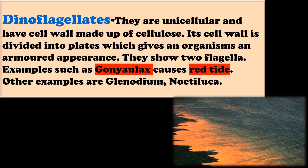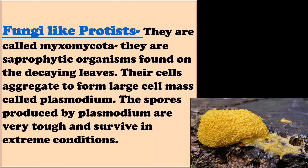The fourth group is fungi-like Protista, also called Myxomycota. They are saprophytic organisms found on decaying leaves. Their cells aggregate to form a large cell mass called Plasmodium. The spores produced by Plasmodium are very tough and survive in extreme conditions.